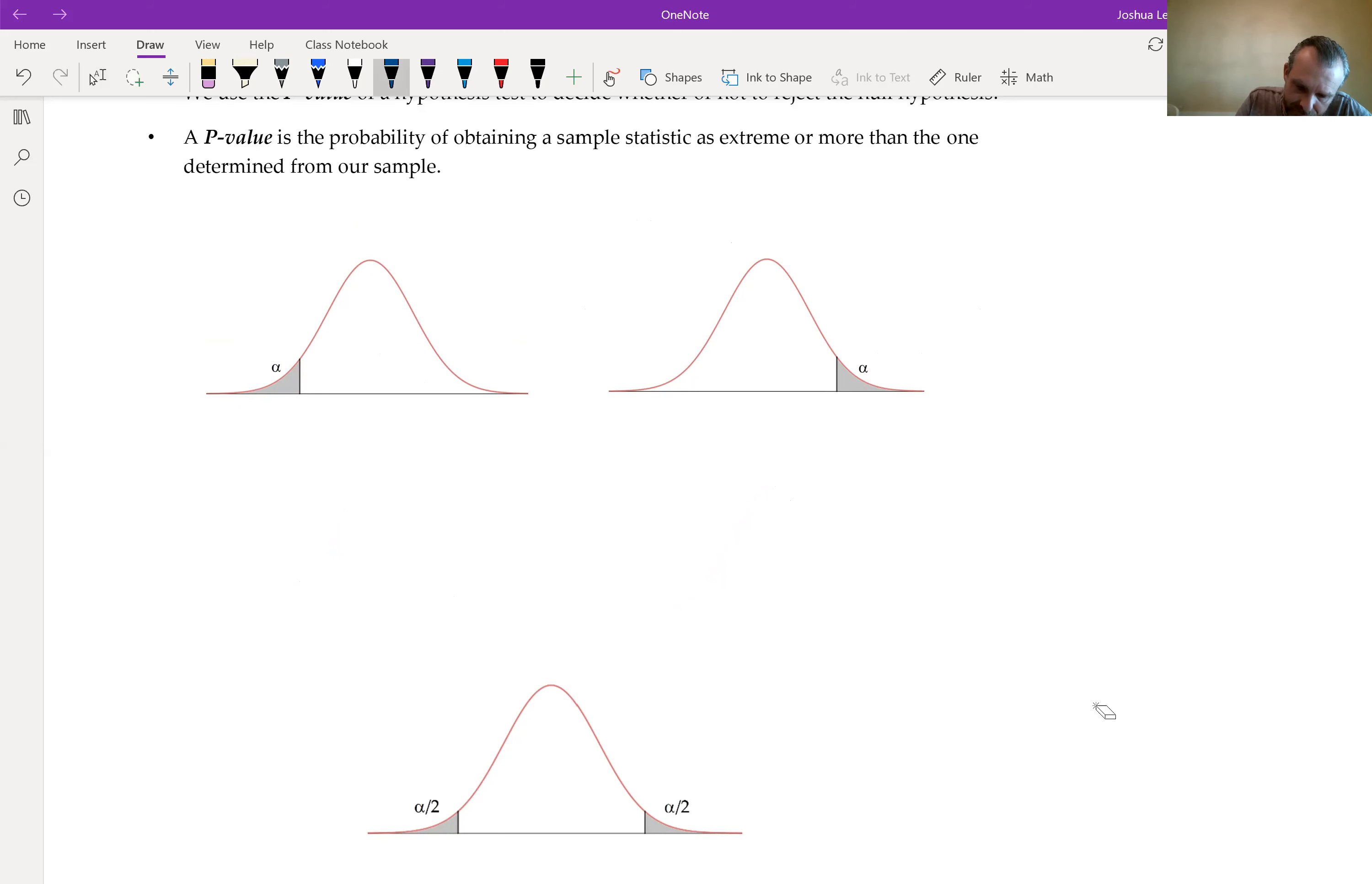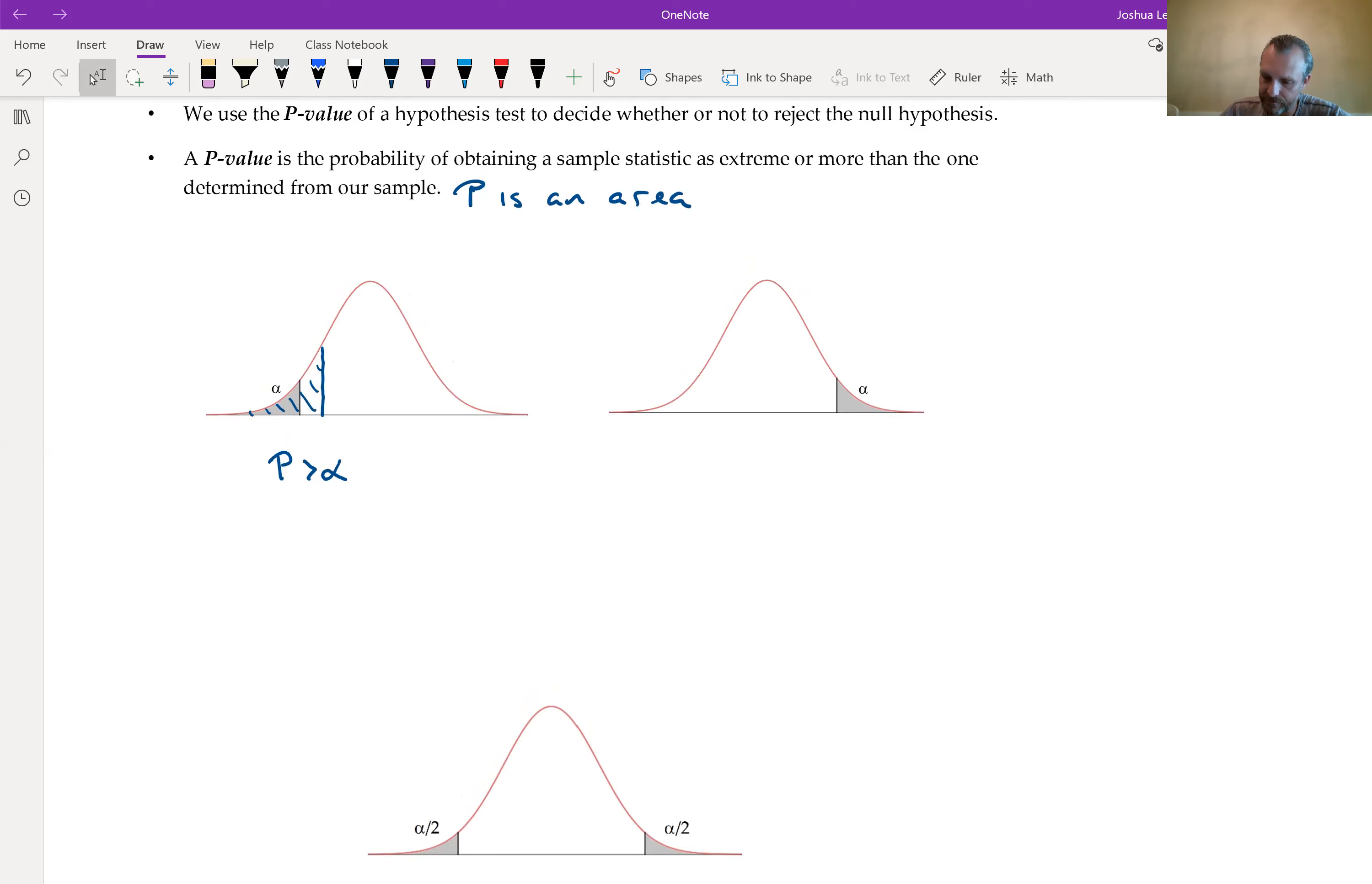Remember, we're saying, let's suppose this hypothesis is true. If it's true, then what's the probability that what we get for our sample is as extreme as it is? As extreme compared to what? Well, compared to our assumption that we get from the null hypothesis. So what does this actually look like? If we have a left-tailed test, alpha is an area. P is an area. We compare areas with areas.